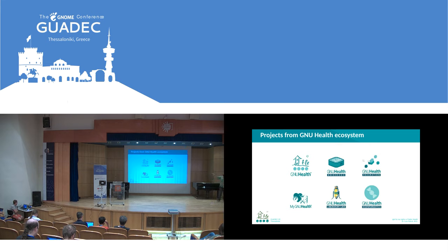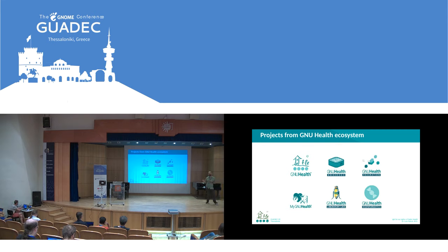These sub-projects are what makes the GNU Health ecosystem. You have things dedicated to hospital management, embedded systems like running it on a Raspberry Pi or other single-board platforms, LIMS laboratory information systems, the GNU Health Federation for large-scale public health networks across a country, bioinformatics, and clinical genetics. Depending on the type of institution you have, you will use one, the other, or both.